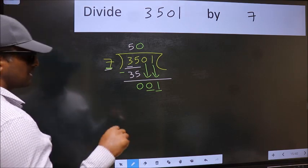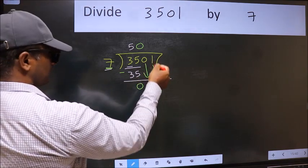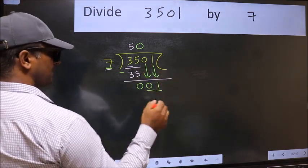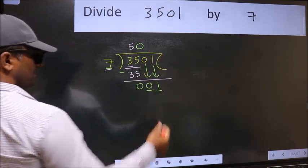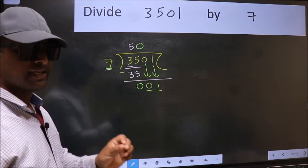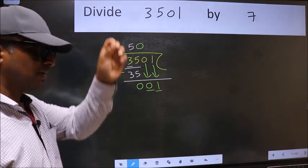Because just now you brought this number down. And in the same step, you want to put dot, take 0. Which is wrong. I repeat.